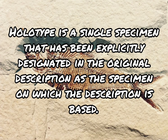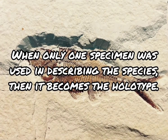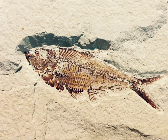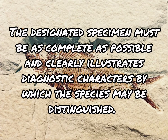Holotype is a single specimen that has been explicitly designated in the original description as the specimen on which the description is based. When only one specimen was used in describing the species, then it becomes the holotype. It is very important to designate a specimen as holotype, especially when we describe a new species. The designated specimen must be as complete as possible and clearly illustrates diagnostic characters by which the species may be distinguished.